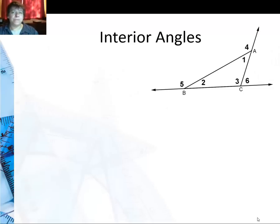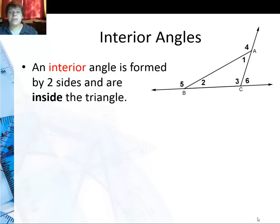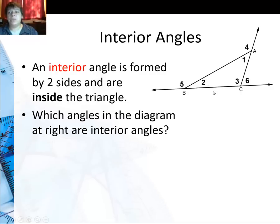Now you've already heard of interior angles and when I talk about angles in a triangle, those are the ones you naturally think of. They are the angle formed by two sides of the triangle and they're inside of it. So the angles that are interior angles here are angle one, angle two, and angle three.